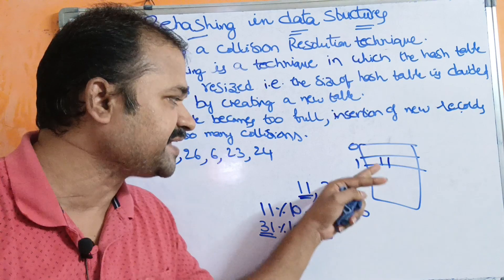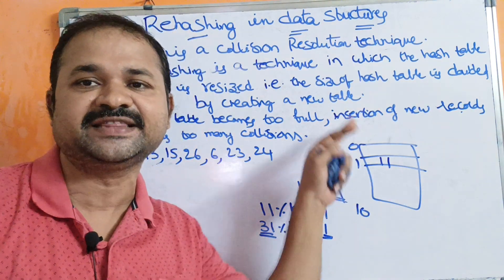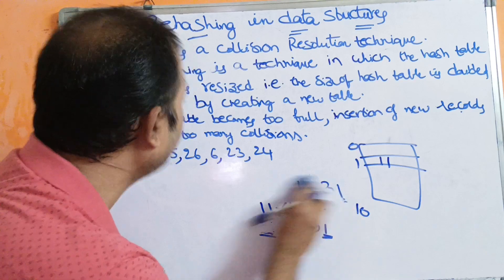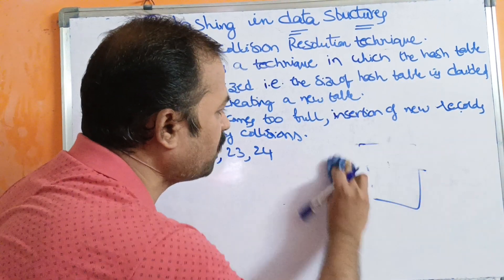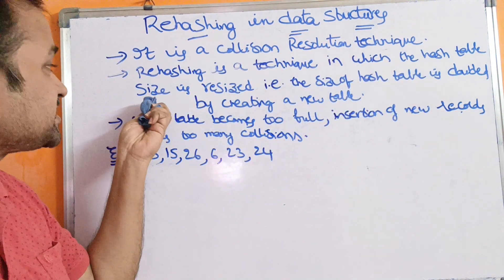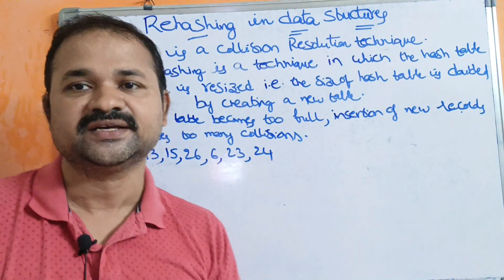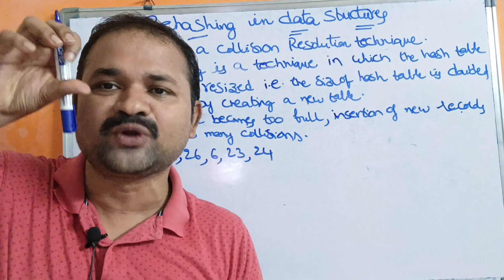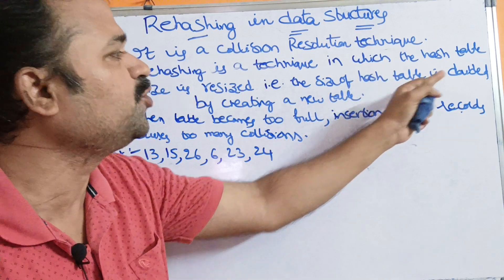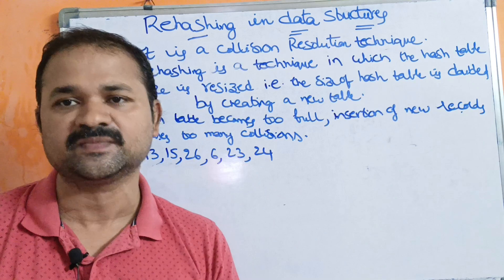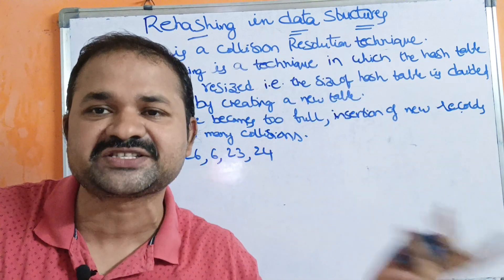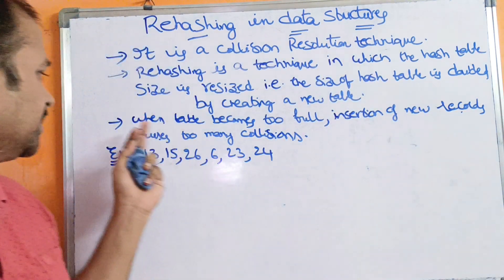When two records are expecting the same location in the hash table, it is called a collision. In order to resolve the collision, we can use the rehashing technique. Rehashing is a technique in which the hash table size is resized — specifically, we double the size of the hash table whenever a collision occurs, by creating a new table.